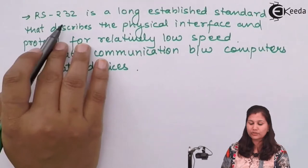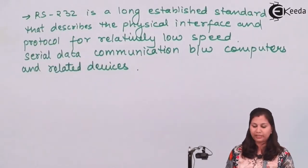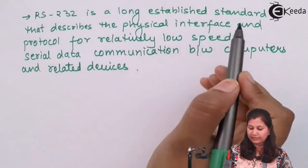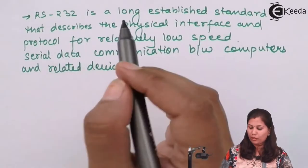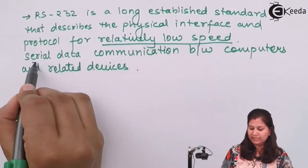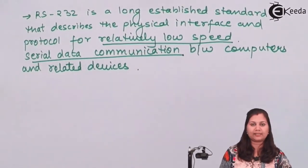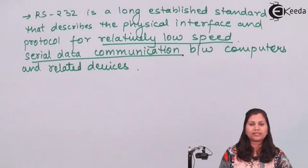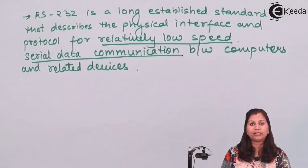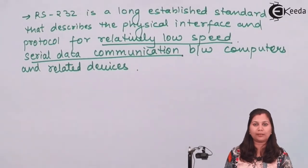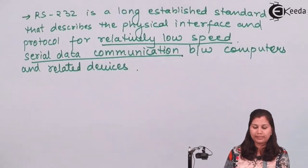RS-232 is used to describe the physical interface and protocol for relatively low-speed serial data communication between computers and related devices. Whenever computers and their devices are communicating and low-speed serial data communication is taking place, we use RS-232 as the communication cable between the equipments.